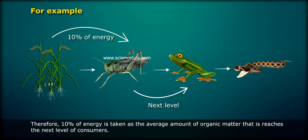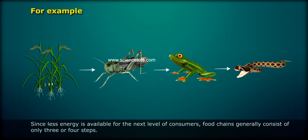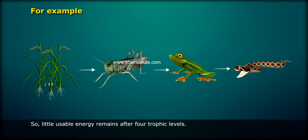Therefore, 10% of energy is taken as the average amount of organic matter that reaches the next level of consumers. Since less energy is available for the next level, food chains generally consist of only three or four steps. So, little usable energy remains after four trophic levels.